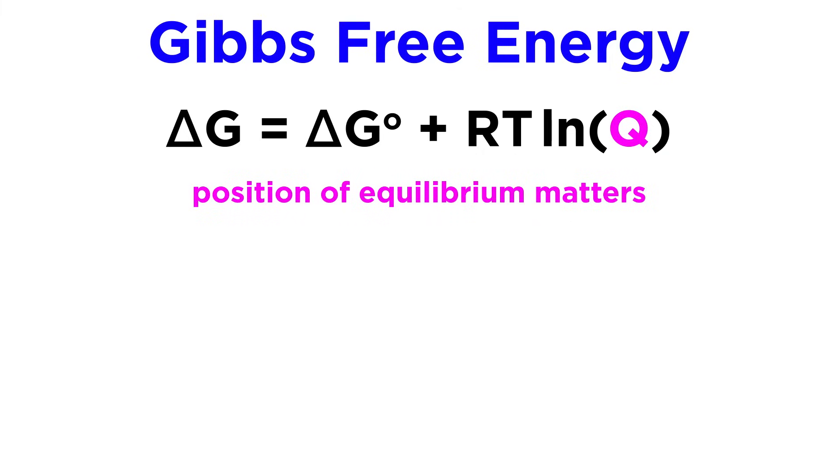In other words, the position of the equilibrium will have an impact here. We should also make note that the version of R that we will most frequently use in this equation is not the same version that we are used to using from the ideal gas law. Instead, we will tend to use 8.314 joules per mole Kelvin.